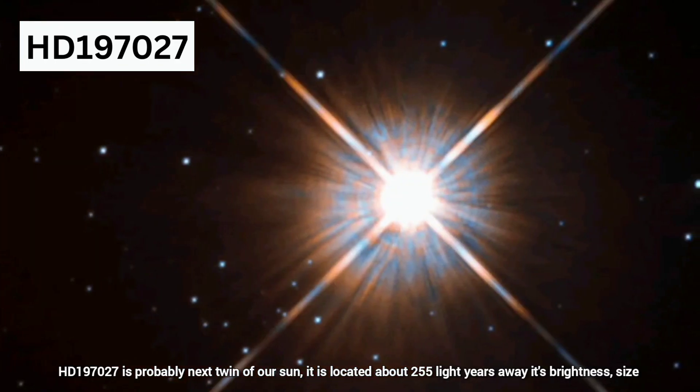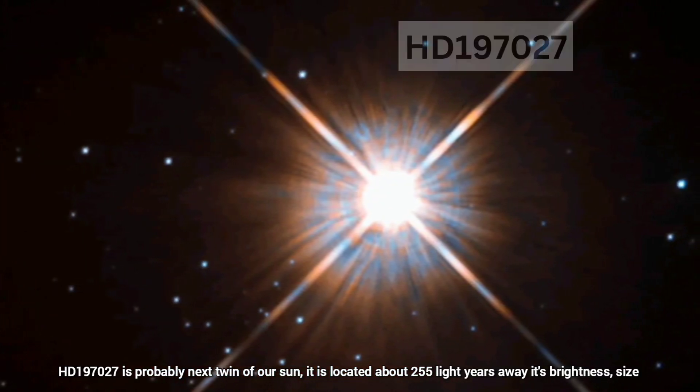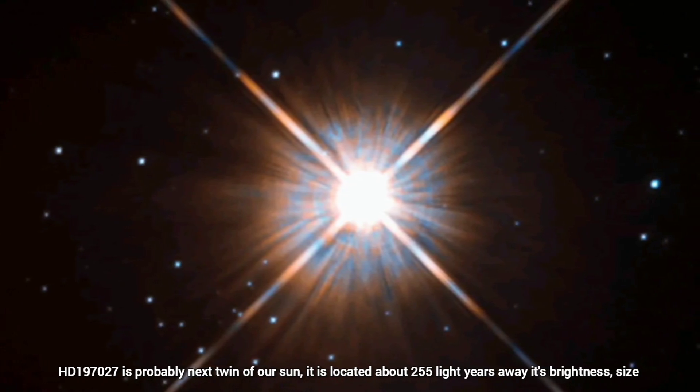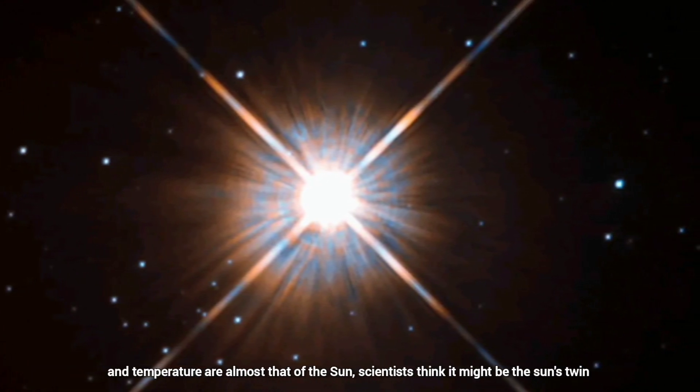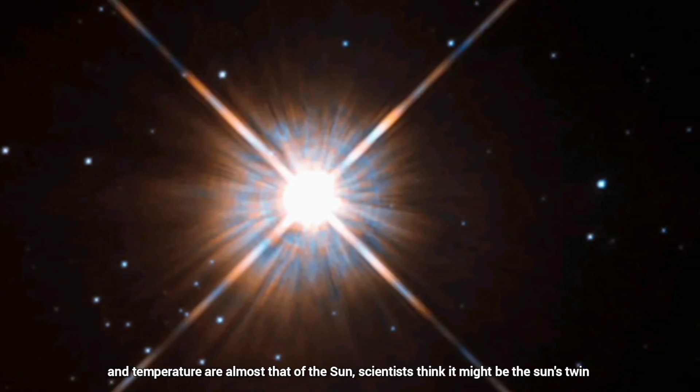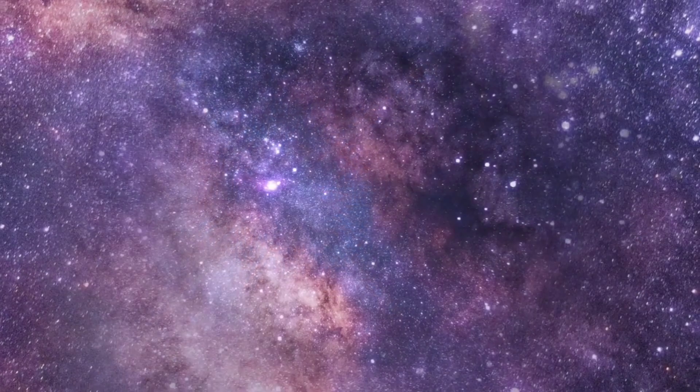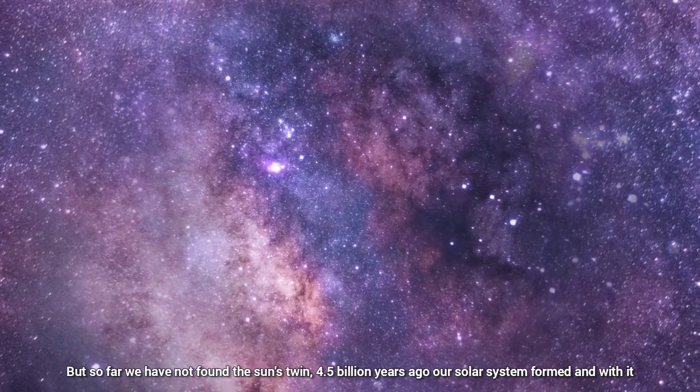HD 197027 is probably the next twin of our Sun. It is located about 255 light years away. Its brightness, size, and temperature are almost that of the Sun. Scientists think it might be the Sun's twin. But so far, we have not found the Sun's twin.